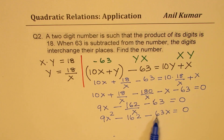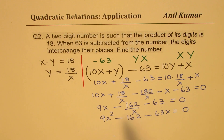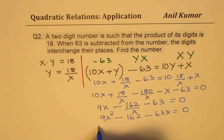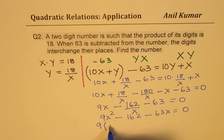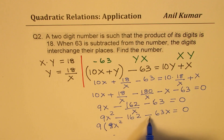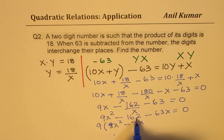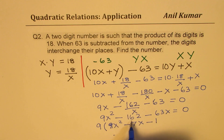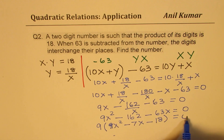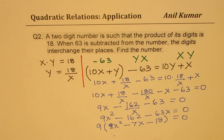Now, 63 and 162 can both be divided by 9, so we take 9 as a common factor. Dividing through by 9 and rearranging with highest degree first, we get x squared minus 7x minus 18 equals 0. Now we have a quadratic equation to solve.